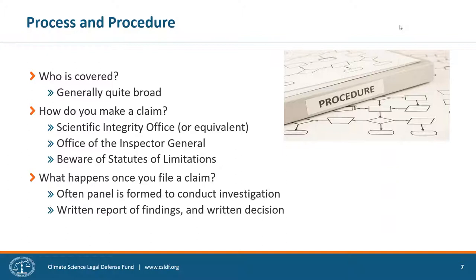Most typically, the scientific integrity officer will appoint a panel to actually conduct the investigation. That panel can collect and review evidence including documents and interviewing parties and witnesses. The panel then issues a written report of findings and recommendations. Those accused of a violation are generally given an opportunity to review that report and provide comments, which are seen by the deciding official. This culminates in a written decision on whether there's been a violation and what should happen. Policies are often not specific about penalties, leaving a huge amount of discretion to the deciding official.